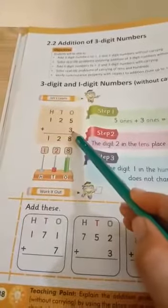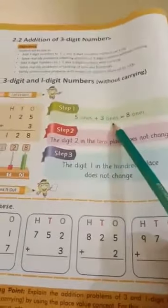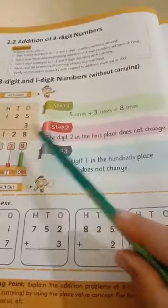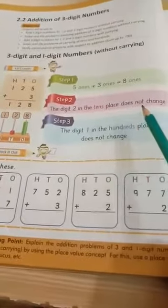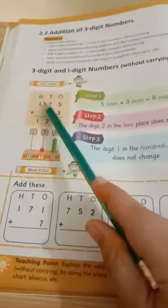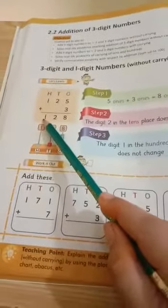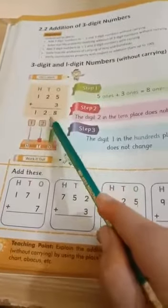125 plus 3. Step 1: 5 ones plus 3 ones, 8 ones. Step 2: 10s mein kitne hai? The digit 2 in the tenth place does not change. Iske neche koi number nahi hai, to ye koi change nahi aega. 2. 100: 1 plus 1, 0. Yahan pe zero hai, to one. One hi haja ga. 1, 28.